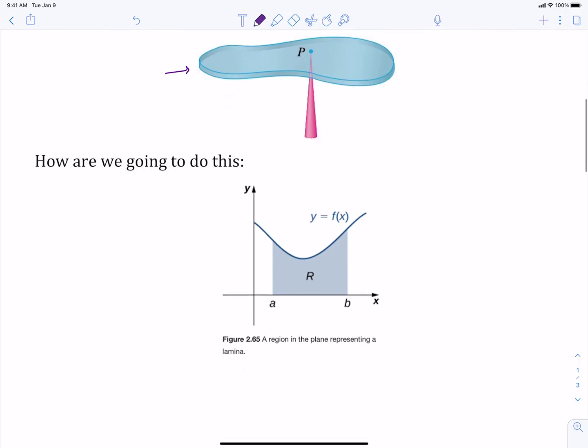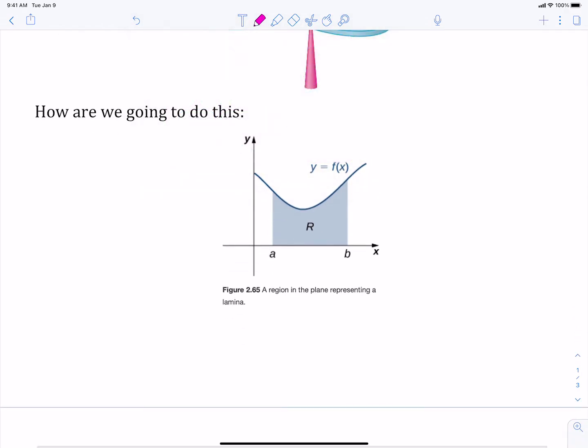So how are we going to do this? Going back to our picture here, it's going to be how we do everything in 252 is that we take our region and we're going to cut it into slices and we're going to figure out what is happening in each of the slices and how we balance those slices. So what we want to do is figure out our mass because we want to find the center of mass. The mass of one rectangle is going to be the density of that rectangle times the area of that rectangle.